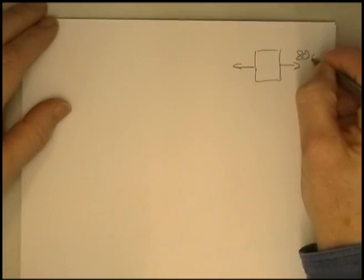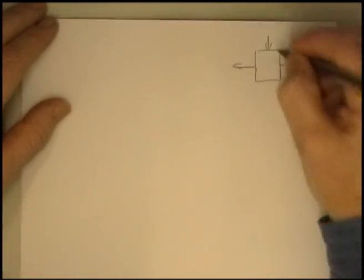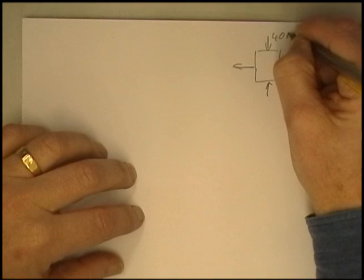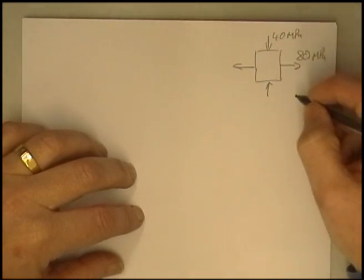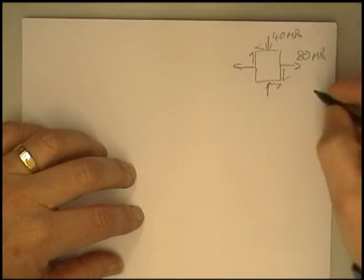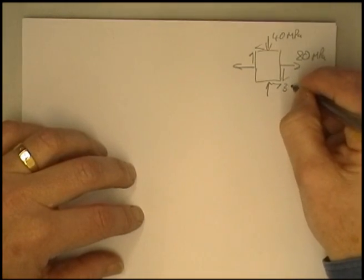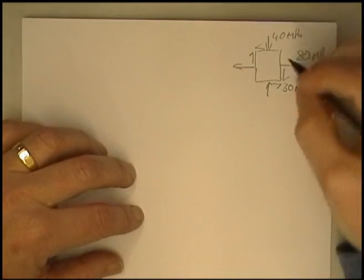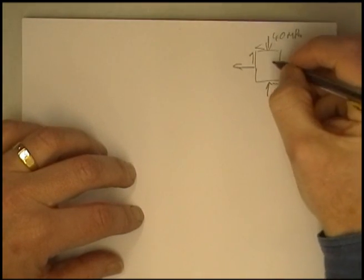Let's do a Mohr's circle for this element. We'll put a tensile stress of 80 megapascals in the x direction, a compressive stress in the y direction of 40 megapascals, and we'll put a shear on going this way and make that 30 megapascals.